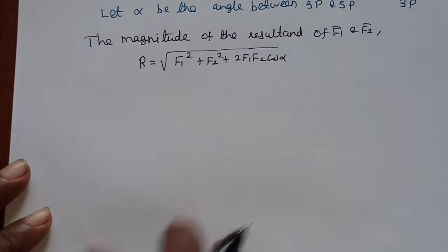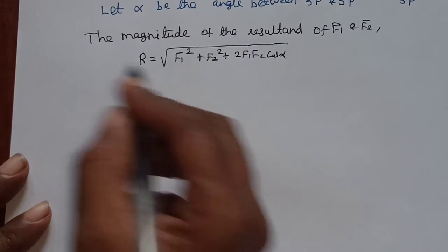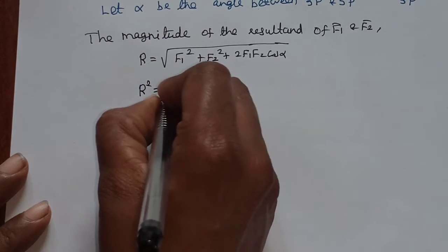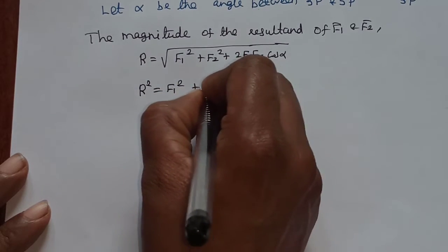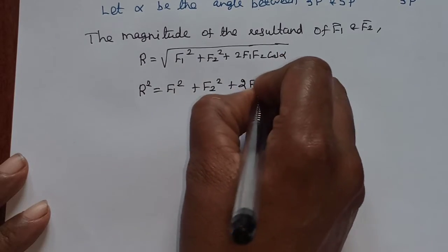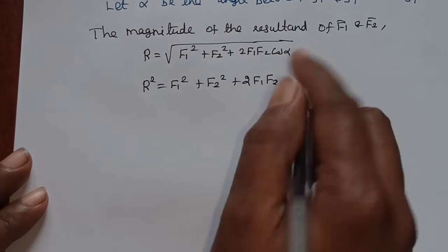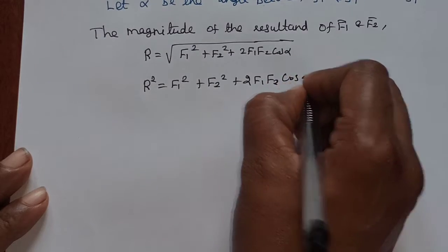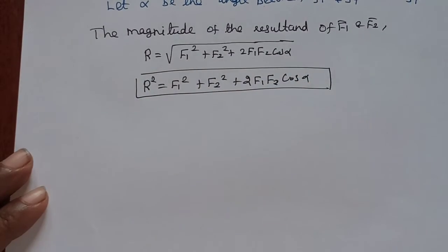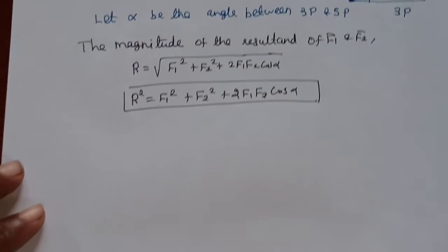Squaring both sides to remove the square root, we get: F1 squared plus F2 squared plus 2 F1 F2 cos(alpha) equals the resultant squared. This formula is equal to 7p squared.